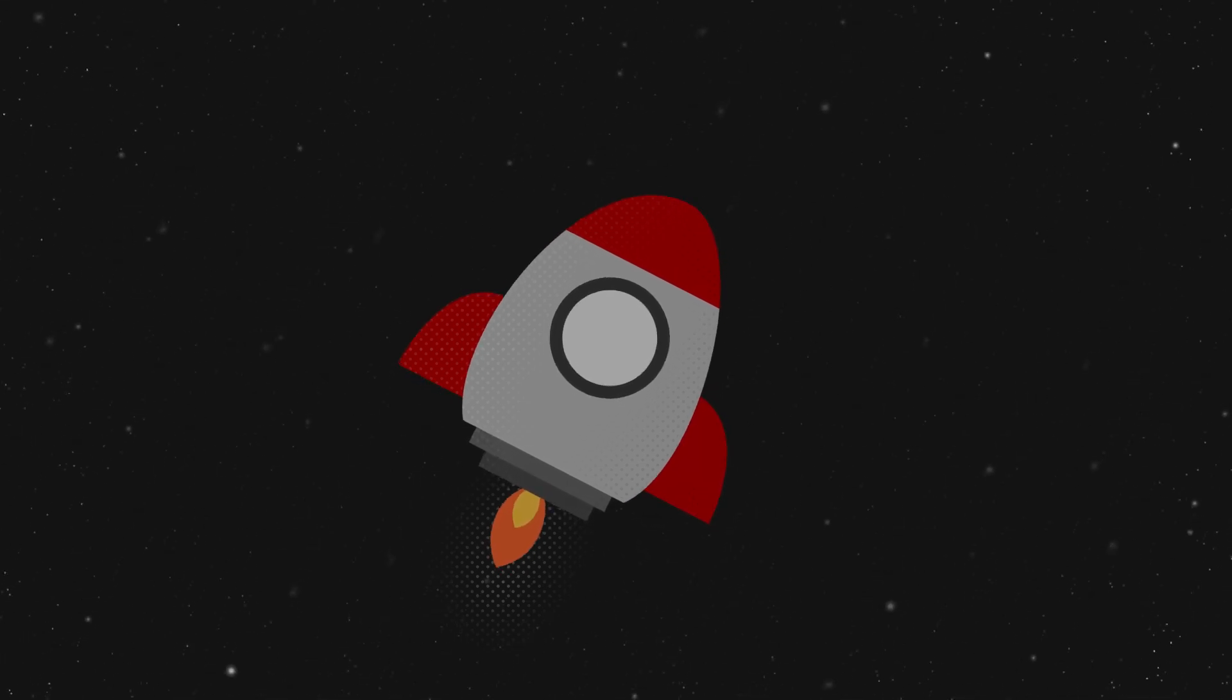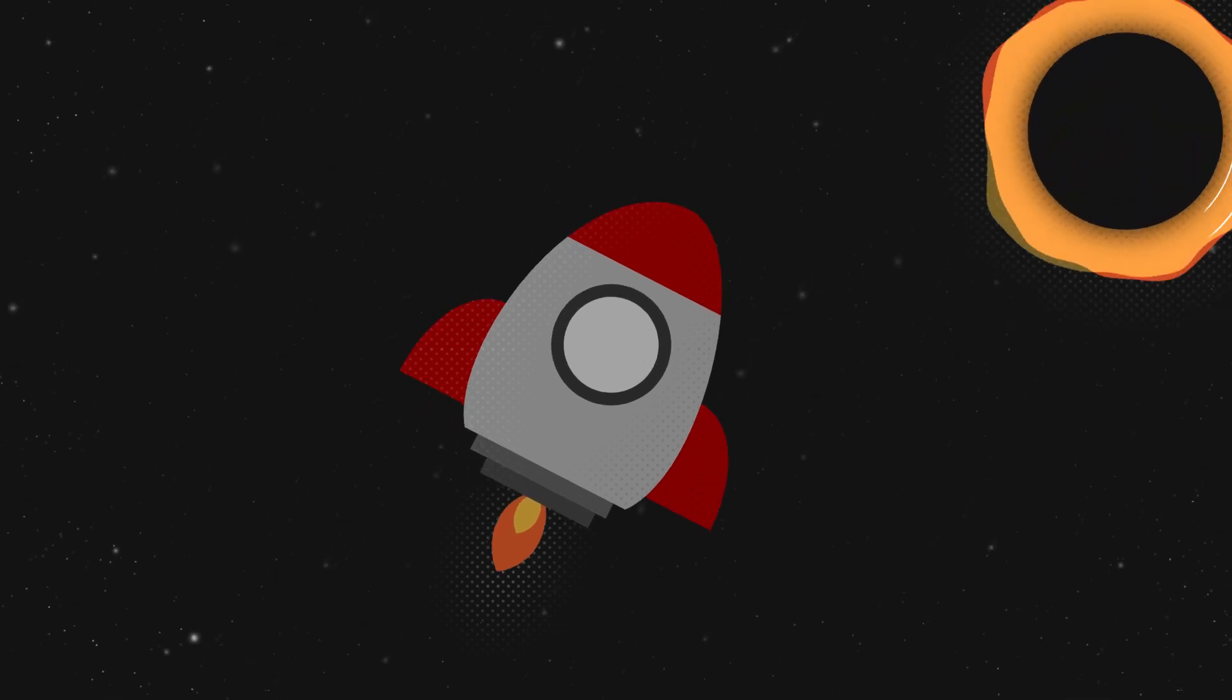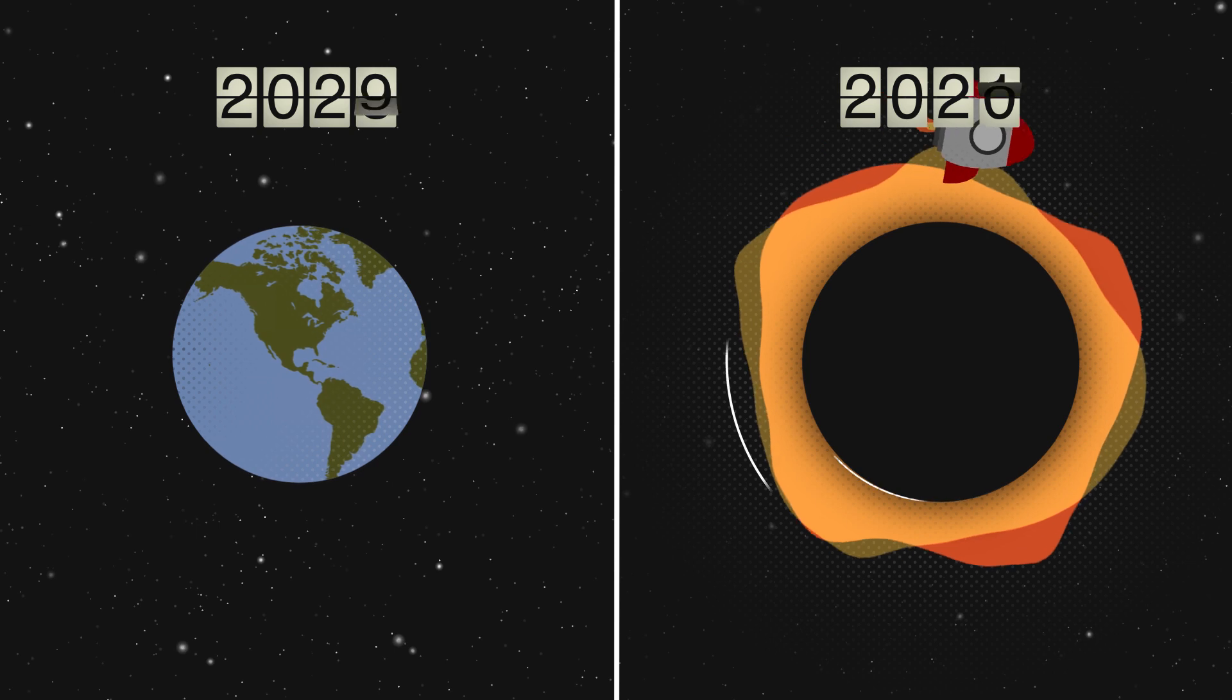Can black holes help us realize our dreams of time travel? Space-time is stretched near a black hole, so it passes by differently. If you went to a black hole and orbited very close to it, everybody on Earth could grow older than you.